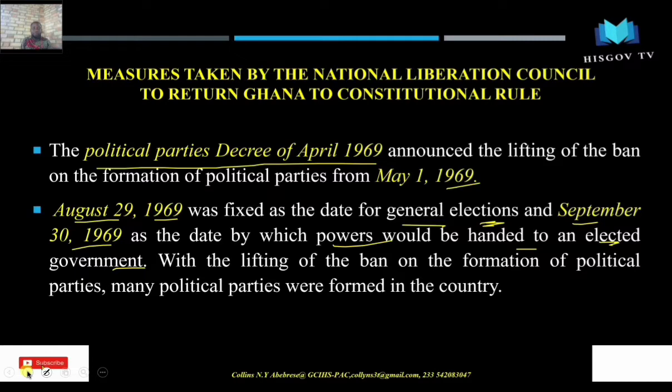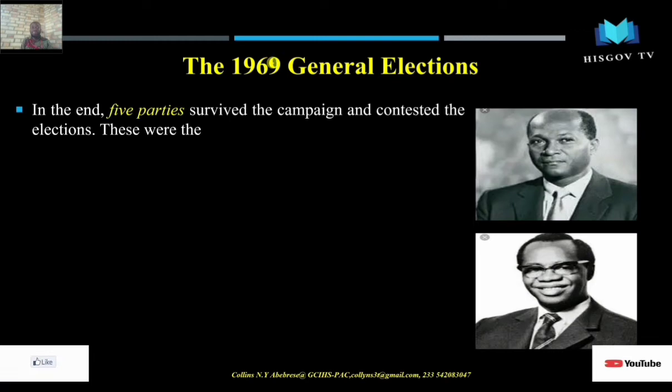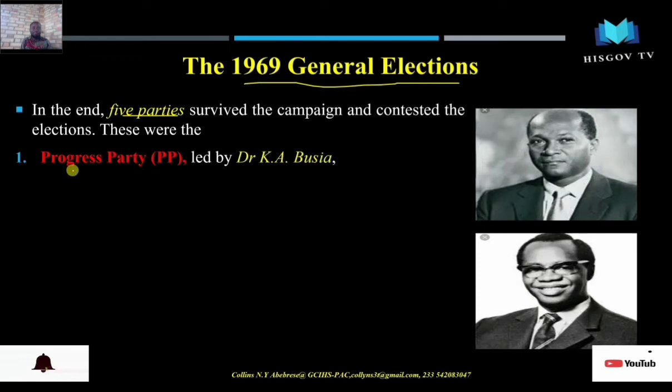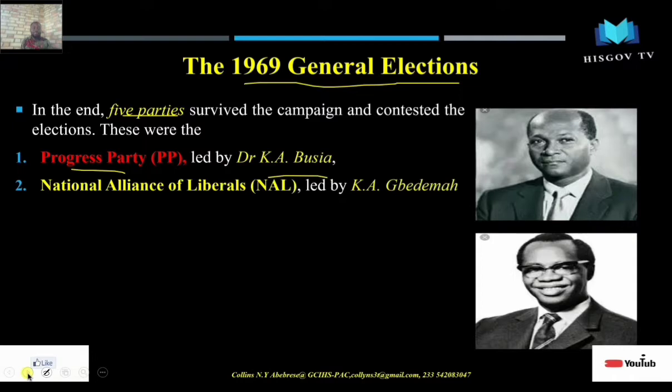Let's look at the outcome of the 1969 election — the election that was going to usher the country into the Second Republic. In the end, five political parties survived and contested the 1969 election. The first political party was the Progress Party, the PP, which was led by K.A. Busia.